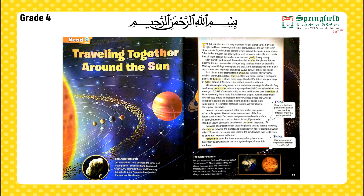Neptune takes much longer to complete its orbit around the Sun because Neptune's orbit is much longer compared to Earth and Mercury. Mercury is our smallest planet, Jupiter is the largest, and Saturn's unique feature is that it has giant rings around it.